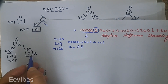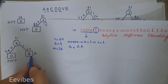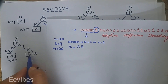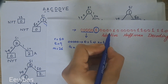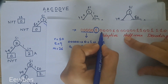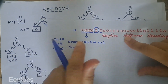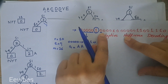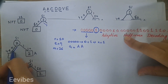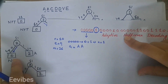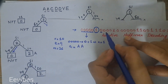Now the tree is updated — the weight of node 'a' becomes 2. Next we read the next bit, which is 0. Tracing the path from the root with bit 0 leads us to the NYT node, so we must read the next four bits to decode the following symbol.